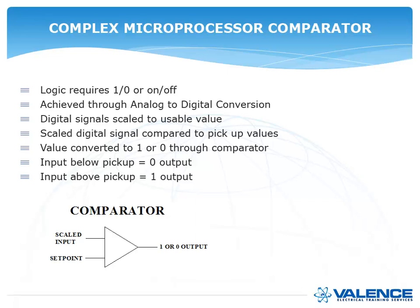The set point is a number that somebody types into the relay, but the scaled input goes through an analog to digital converter. So if you have 5 amps going into the relay, there's an analog to digital converter that converts that 5 amp analog signal into a 5 amp digital signal. Then if 5 amps happens to be greater than the set point, the output of this comparator will be a 1. If 5 amps is lower than the set point, the output will be a 0.